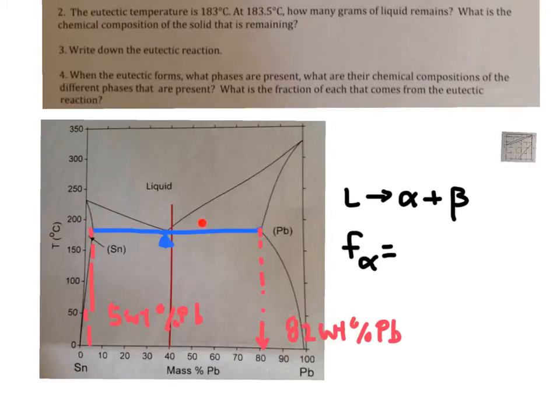Now remember, use the opposite part of the lever. So this part over here, this part divided by the whole length. So those values are 82 minus 38 divided by 82 minus 5.